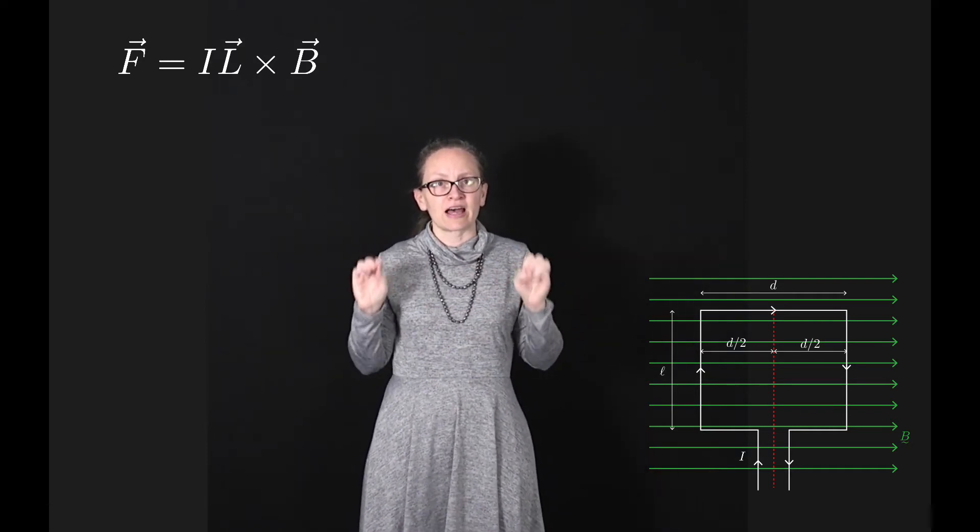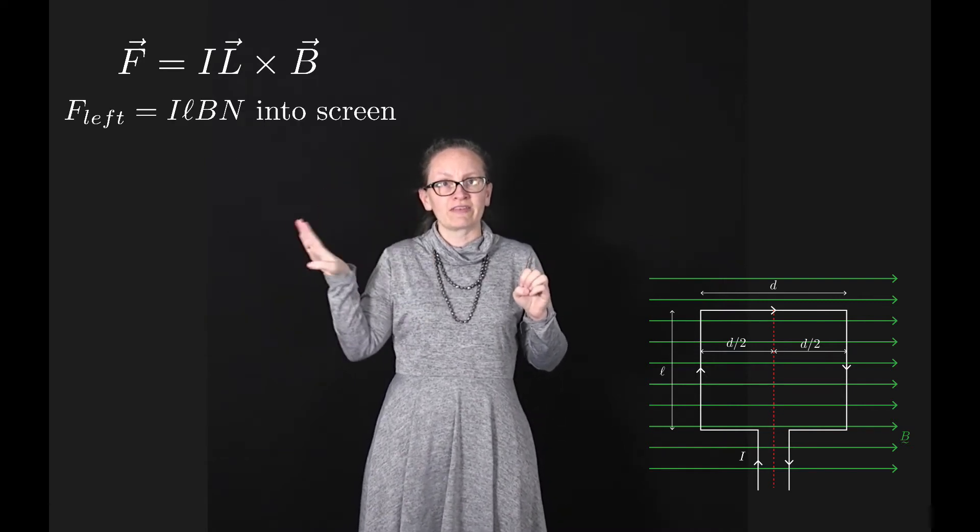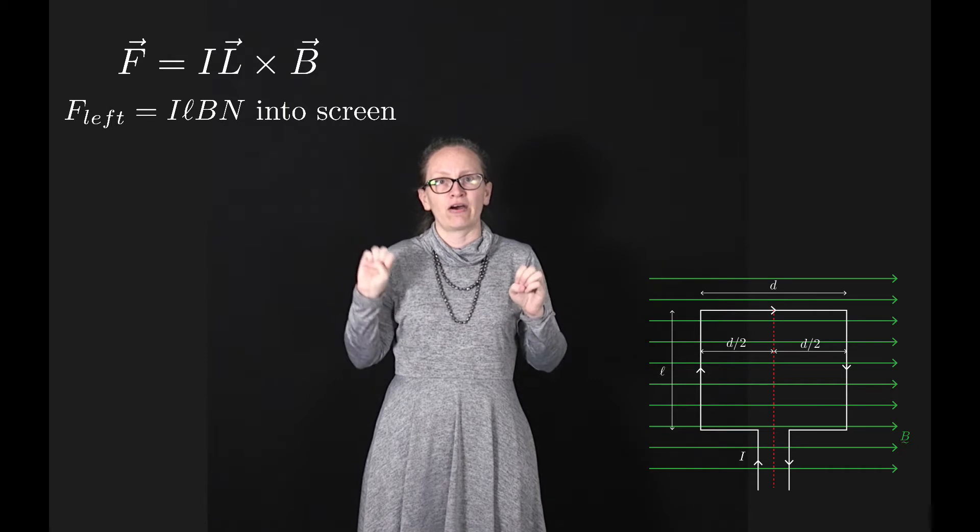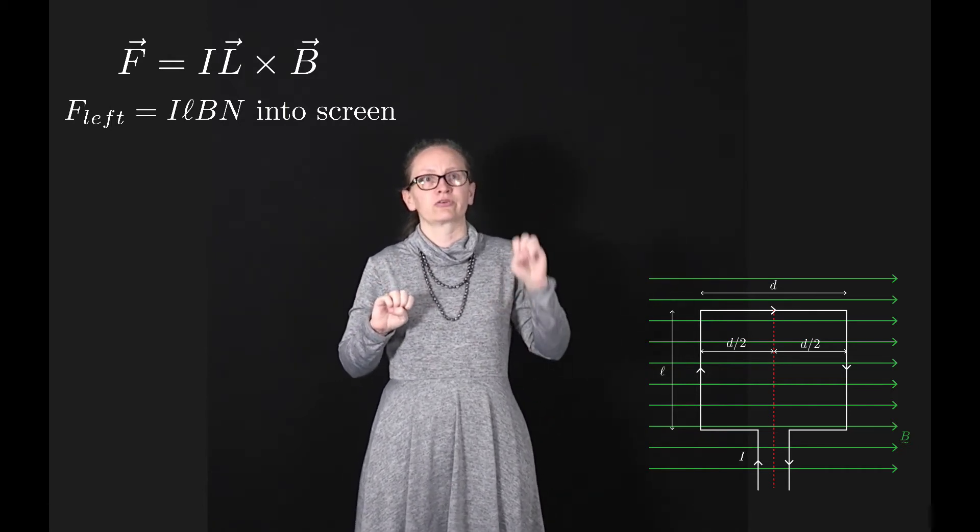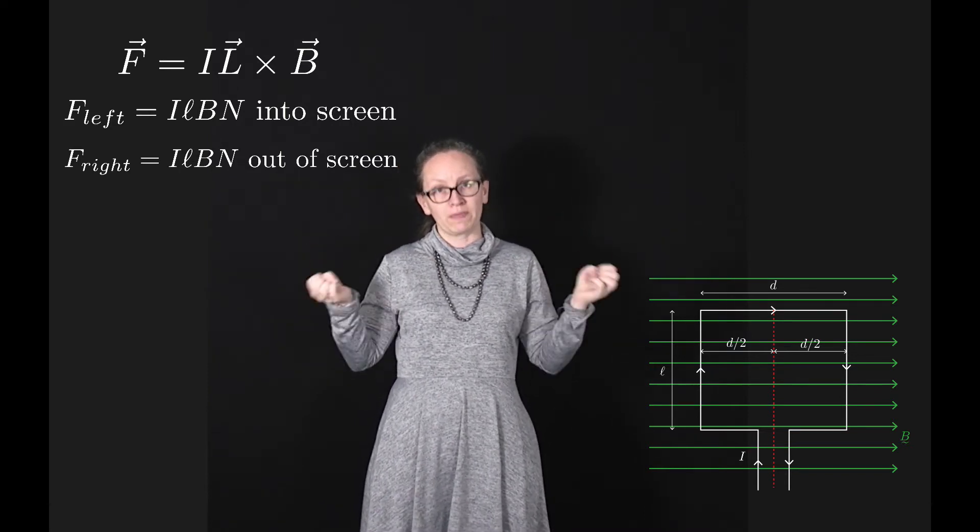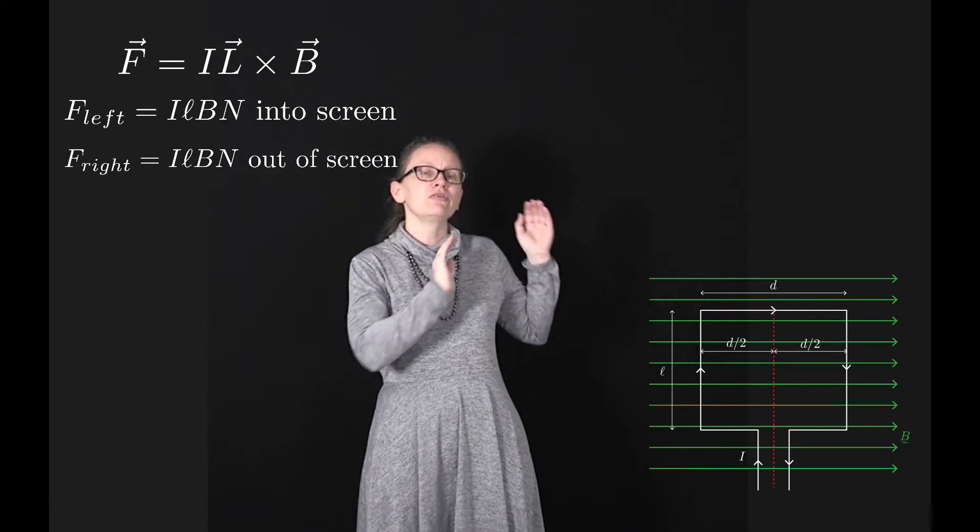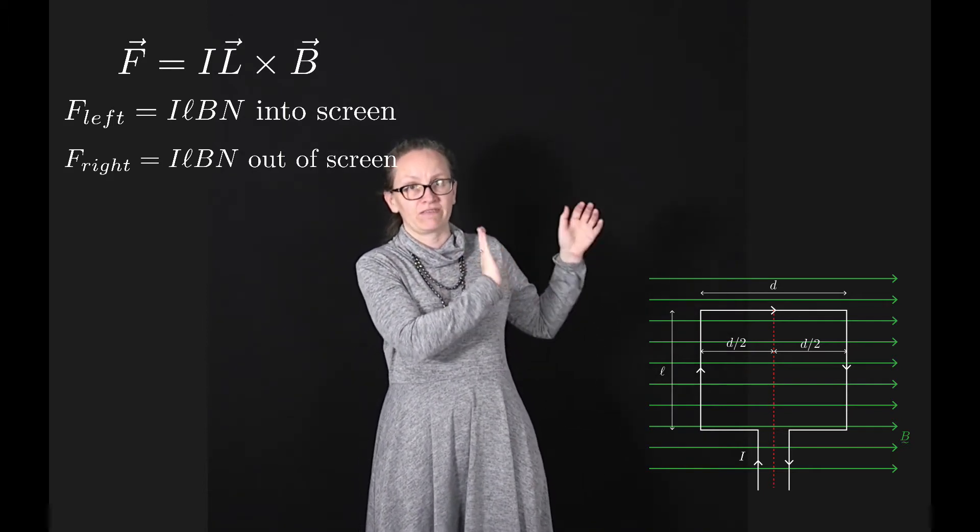We can calculate the size of the force with our force equation. For the left-hand side it equals I L B N, and for the right-hand side it also equals I L B N. These two sides have equal but opposite forces, so there's no net force on our loop of wire in the magnetic field.